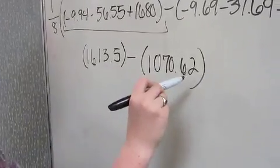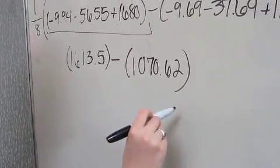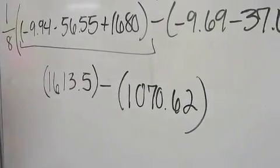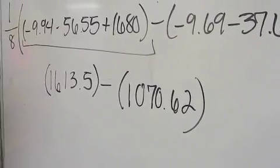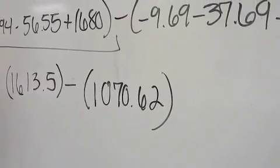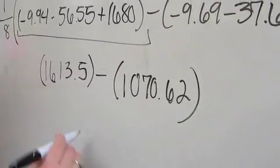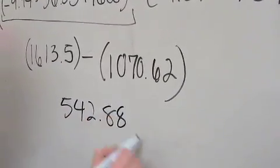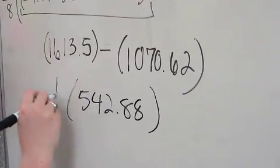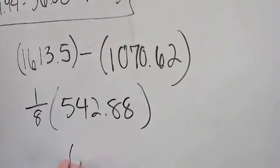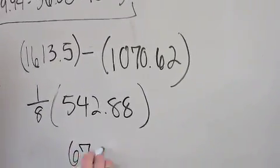So, we have to put these two together and add it into your calculator. 1,613.5 minus 1,070.62. That comes out to 542.88. You then have to multiply this quantity by 1/8 to get the average, which comes out to be 67.86.